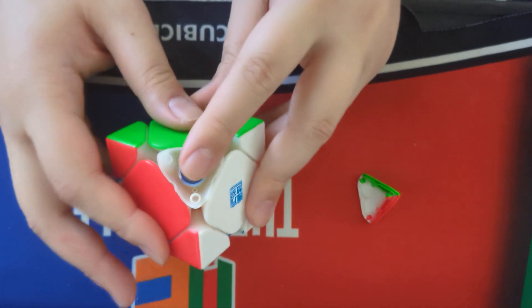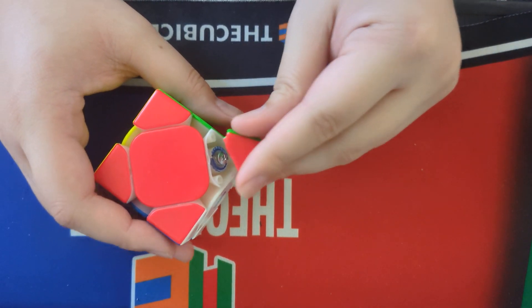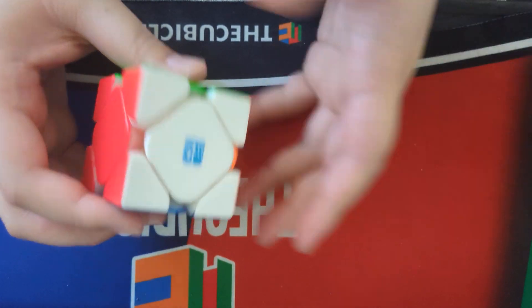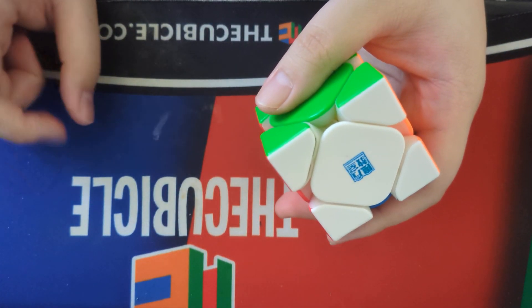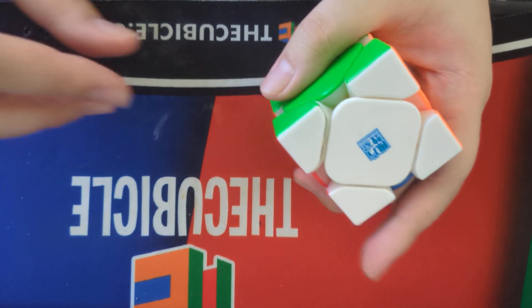All right, so it's been about five minutes since we put in that super glue. Now we're going to go ahead and press that back together. Now you may notice that there's going to be a little bit more force needed to kind of push this piece back into place. That's good because that means that now there's a lot more friction to hold the corner cap into place.